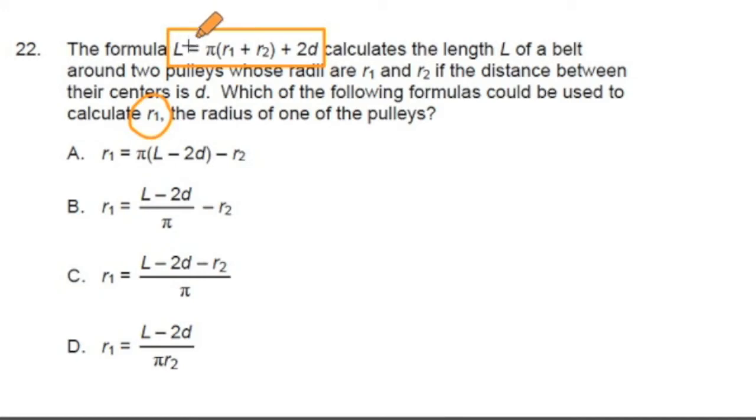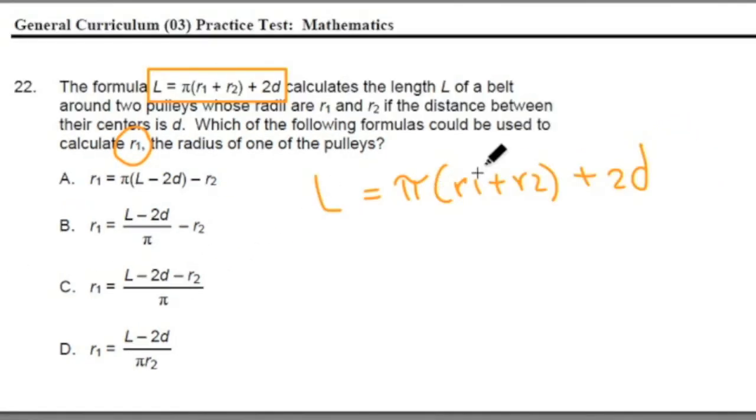On either side of this equal sign, we can solve for different variables depending on what's on one side of the equal sign. So I'm going to rewrite this equation out as L equals pi times the quantity of radius 1 plus radius 2 plus 2d. And I'm going to circle the r1 because that's the variable that we're going to solve for. And we're going to solve for this problem in three easy steps.